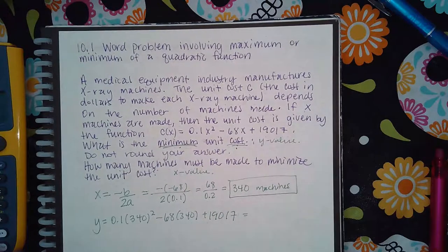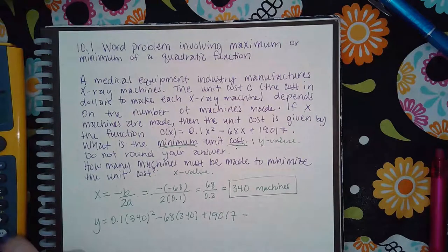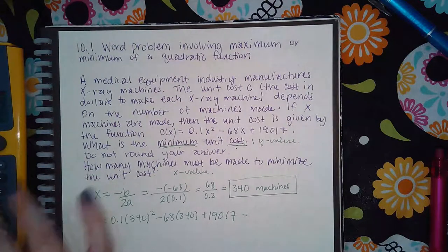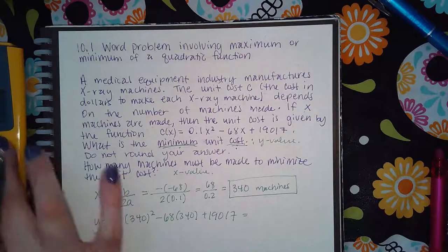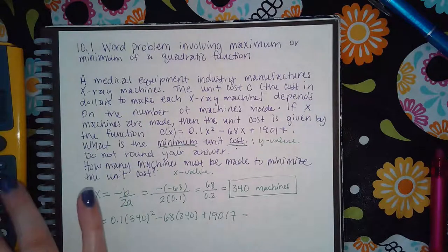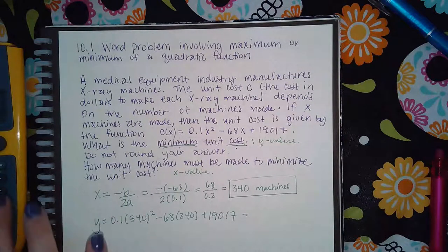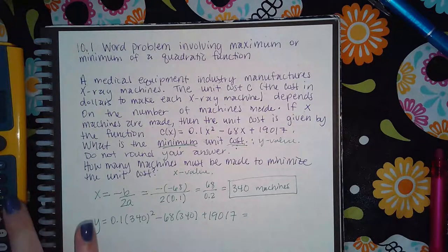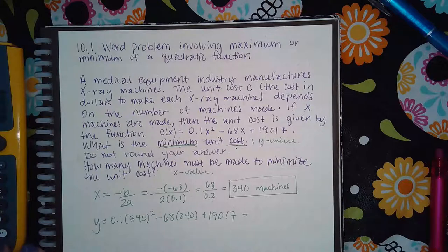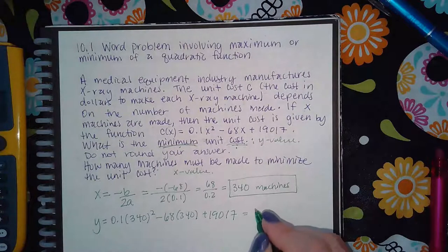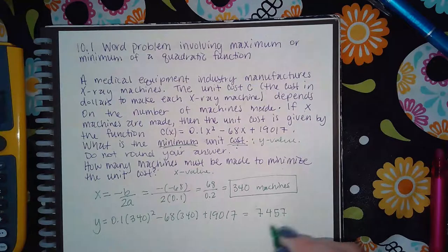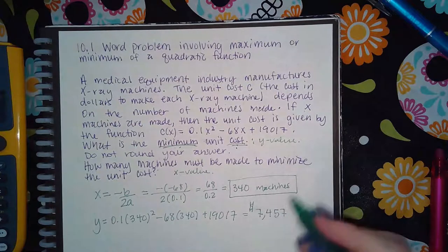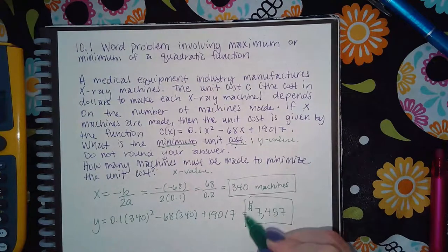And so when I do that, I get 340² - 68 times 340 + 19,017. And I get 7,557. So this is how much money would be the minimum cost.